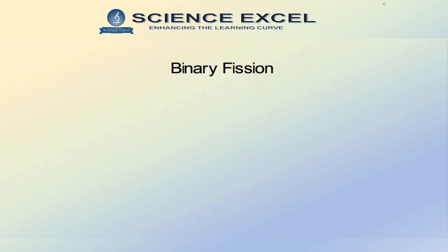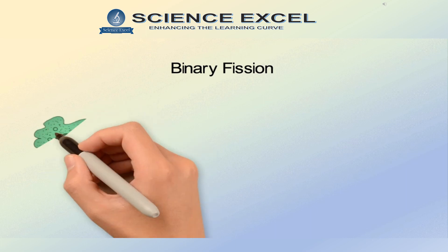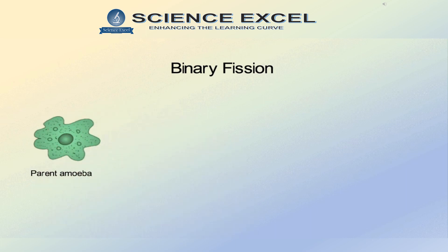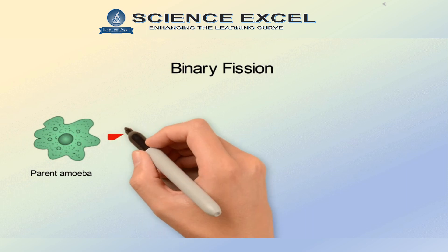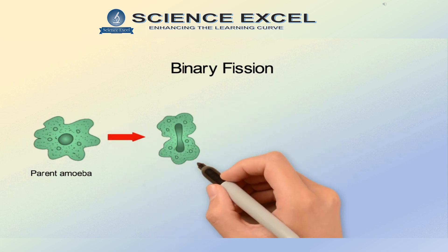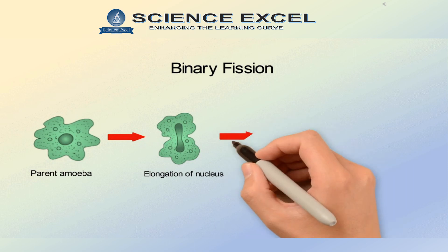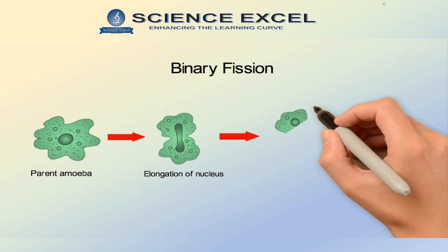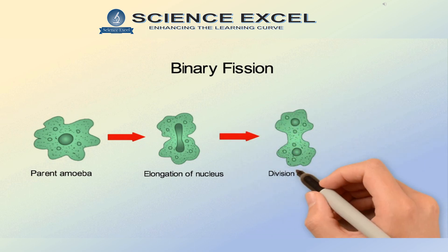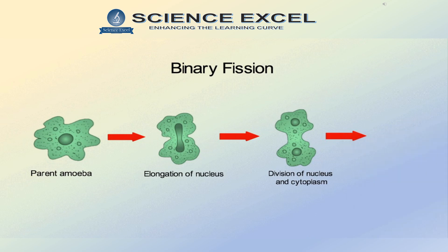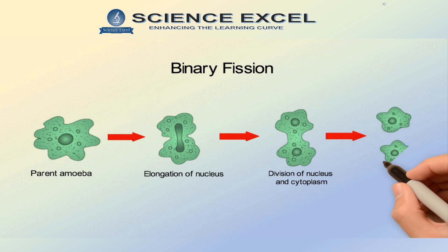The term binary means two and fission means splitting, which means splitting into two. In this method, the nucleus of the parent organism — amoeba depicted as an example — elongates. The nucleus and cytoplasm splits or divides into two, and then the cell splits across, forming two small identical cells called daughter cells.